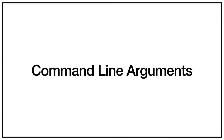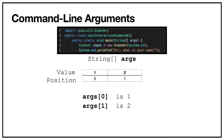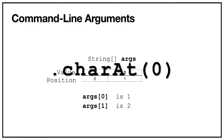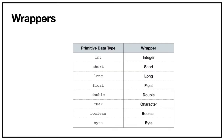The next topic is command line arguments — another way to get information from the user. Command line arguments come from the String[] args parameter you see in every Java main method. Those square brackets indicate an array — we'll cover arrays later, but basically whatever you pass as arguments gets stored as an array of strings. For example, if you enter 1 and 2 on the command line, 1 is stored at position 0 and 2 at position 1.